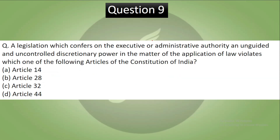Question 9: A legislation which confers on the executive or administrative authority an unguided and uncontrolled discretionary power in the matter of the application of the law violates which of the following articles of the Constitution of India? Options: Article 14, 28, 32, or 44.